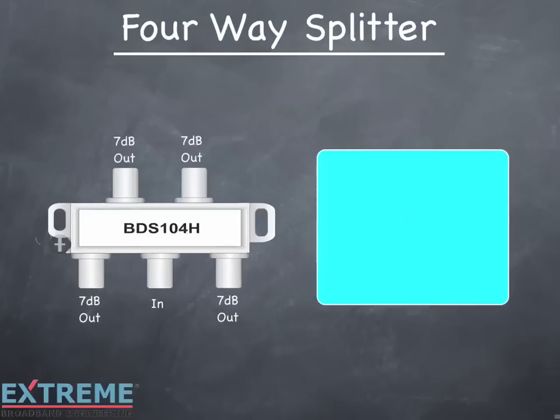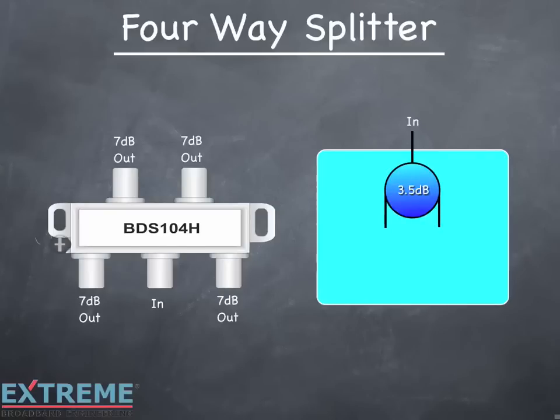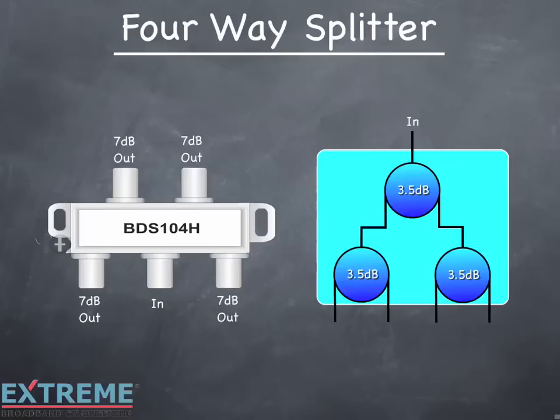On the left is a four-way splitter with all legs losing 7 dB. On the right, let's build the symbol equivalent of the four-way splitter. With the three-way splitter we saw that the 7 dB ports were made up of two two-way splitters, one feeding the other. So a four-way splitter is made up of one two-way splitter, with its two output ports each feeding an additional two-way splitter, for four ports with 7 dB of loss each.